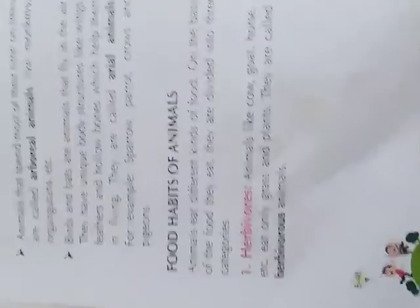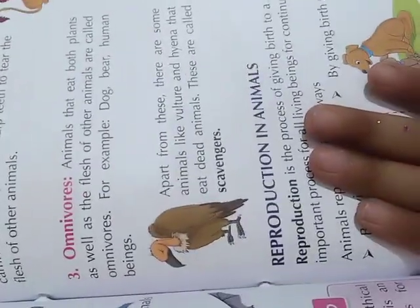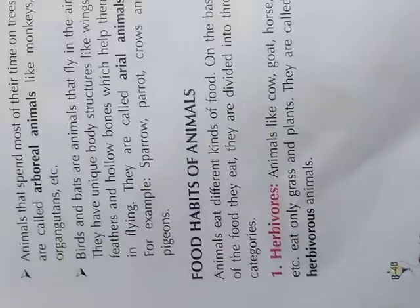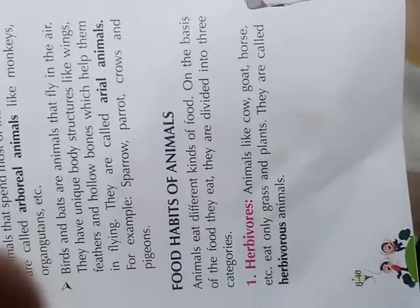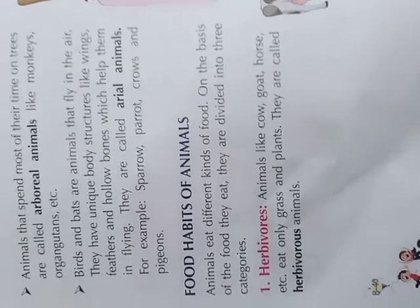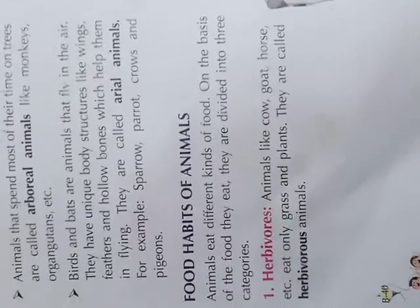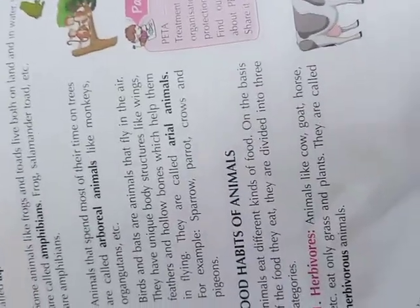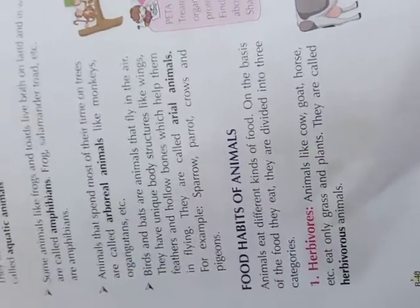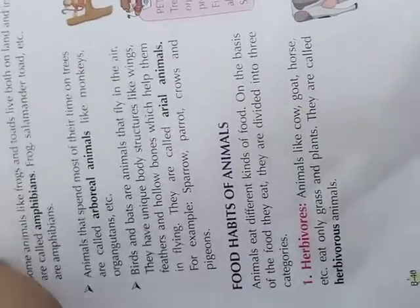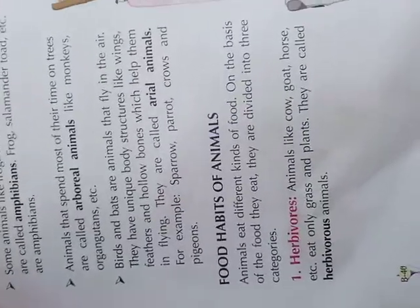Food habits of animals: herbivores, carnivores, omnivores, and scavengers. Herbivores are animals like cow, goat, horse that only eat grass and plants. Animals which only eat plants are called herbivores.